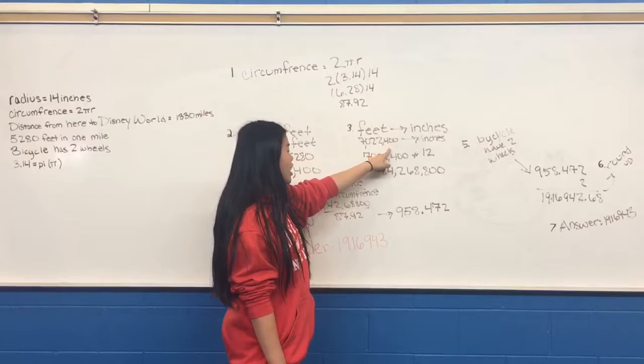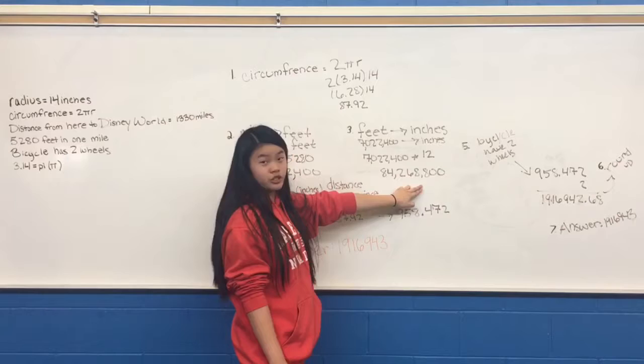After that, you multiply 7,022,400 by 12, and then you finally get 84,268,800.